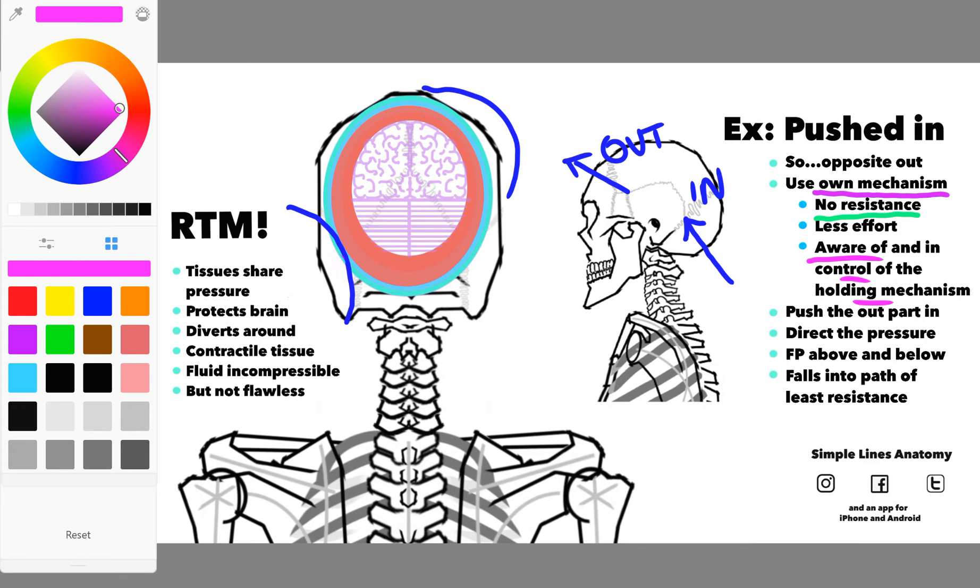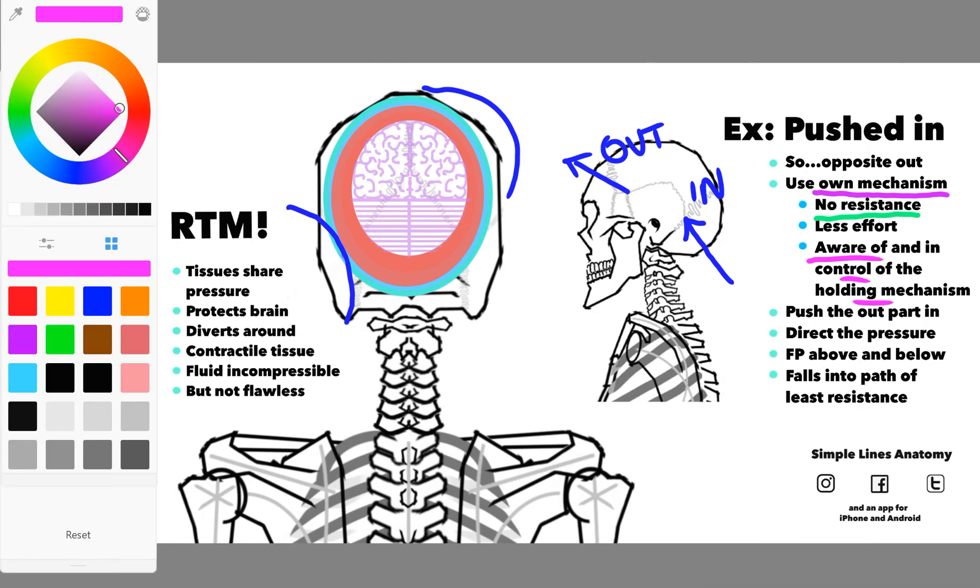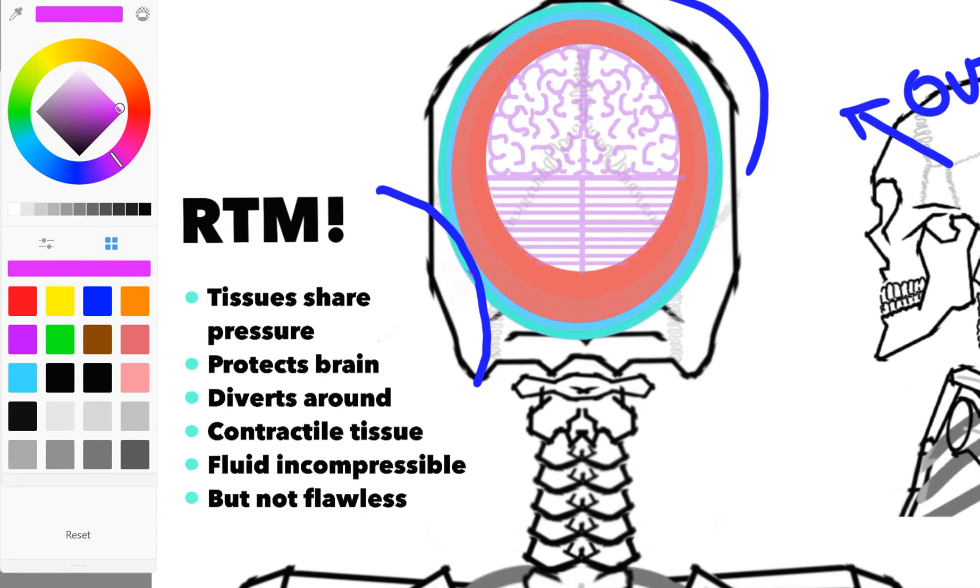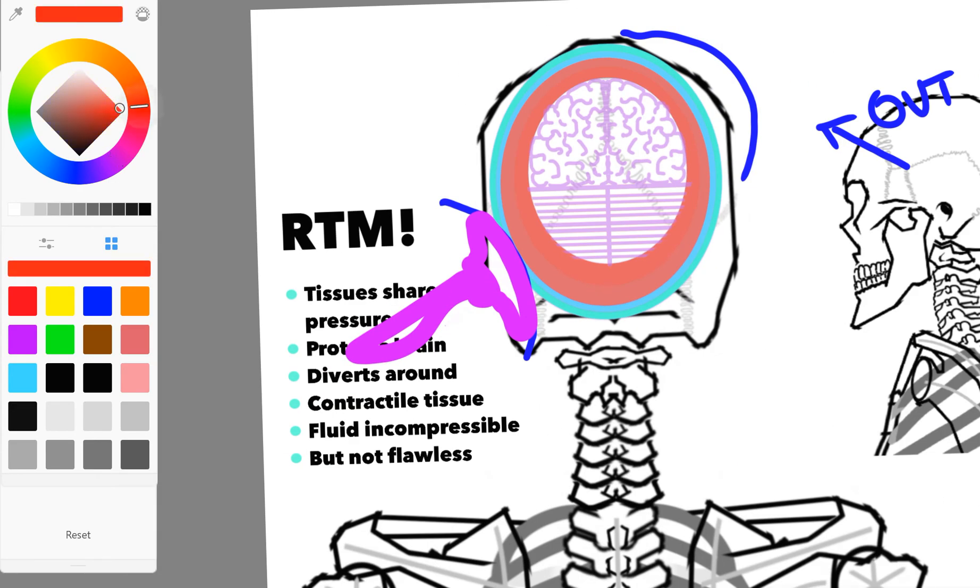Ultimately, if we use the body's own mechanisms of correction, it doesn't require as much effort on our part or on the body's part to hold it after the adjustment. It must be aware of what's going on - not a foreign outside force coming in, something it knows well. As an example, a really simple example, let's say I wanted to push this back into place.